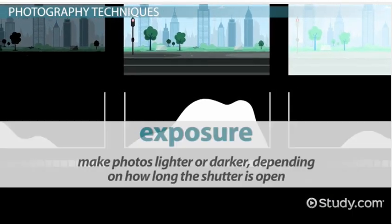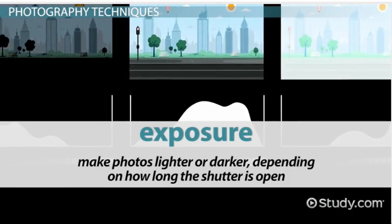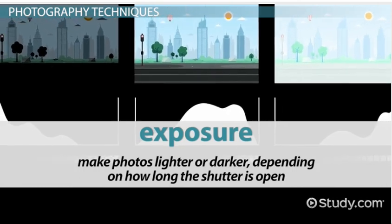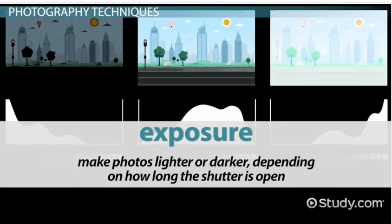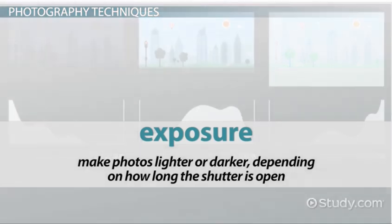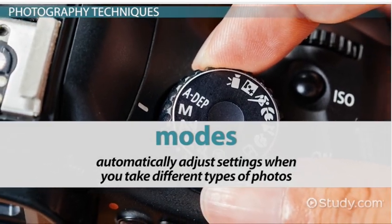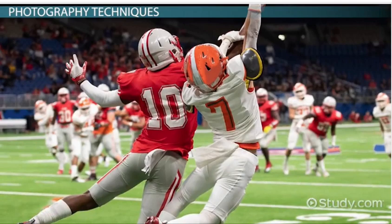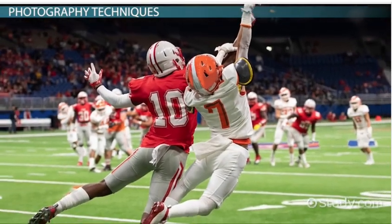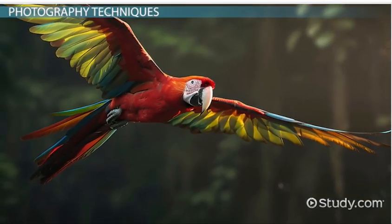If you have a digital camera, most will automatically adjust the exposure for you. Exposures make photos lighter or darker, depending on how long the shutter is open. Modes automatically adjust settings when you take different types of photos — with the right mode, sports photos won't look blurry, and you can capture a shot of a bird in flight.